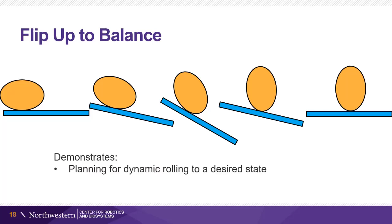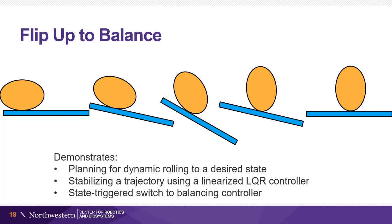This demonstrates planning for a dynamic rolling to a desired state, stabilizing a trajectory using a linearized LQR controller to improve robustness, and a state-triggered switch to a balancing controller.